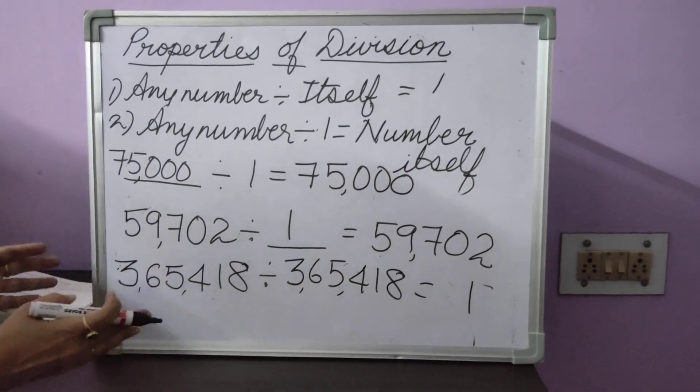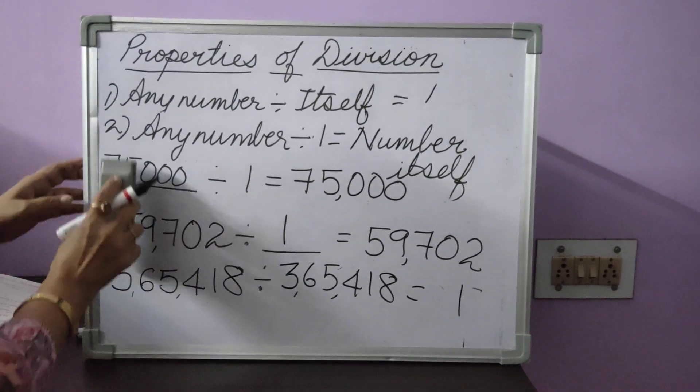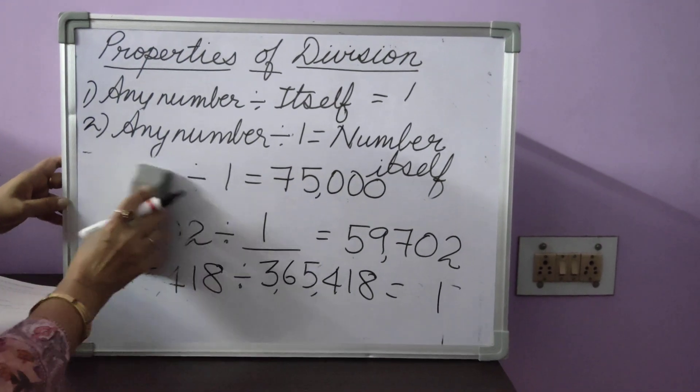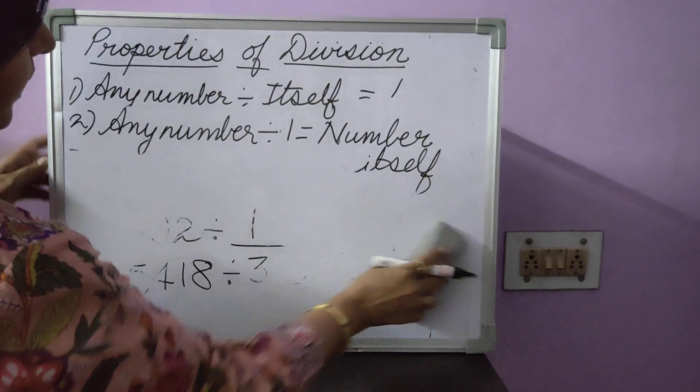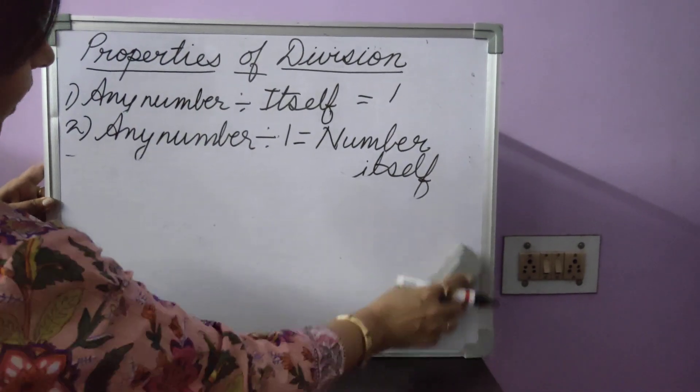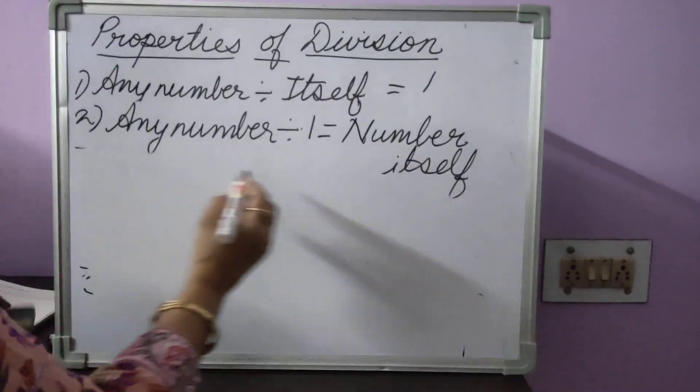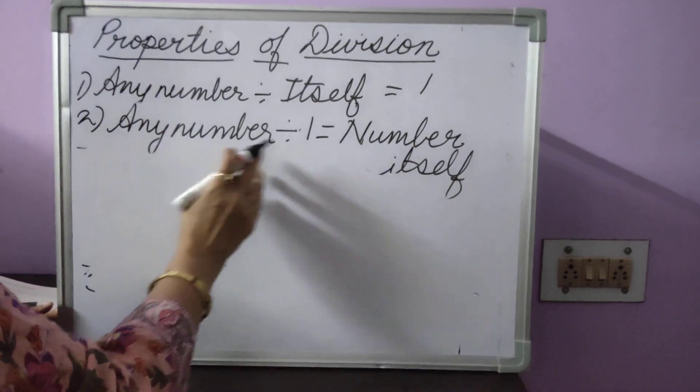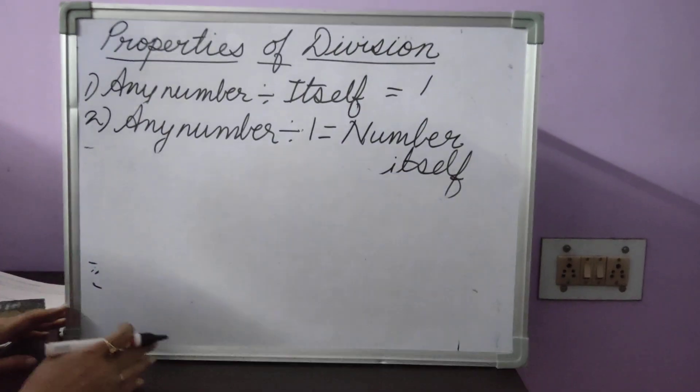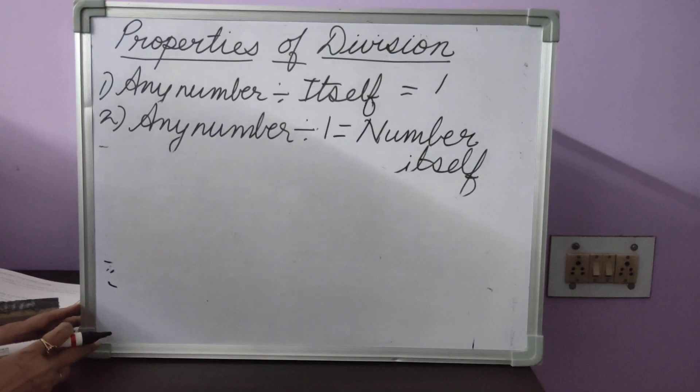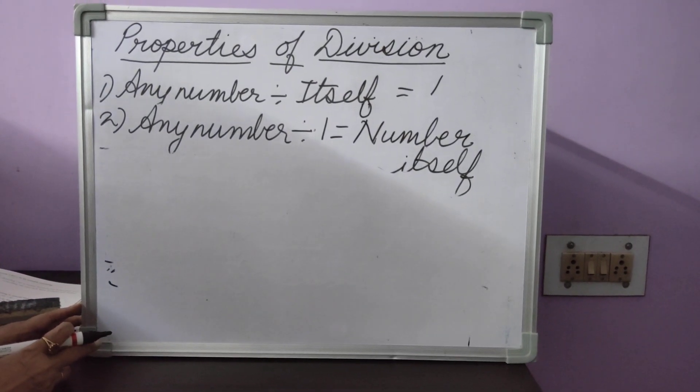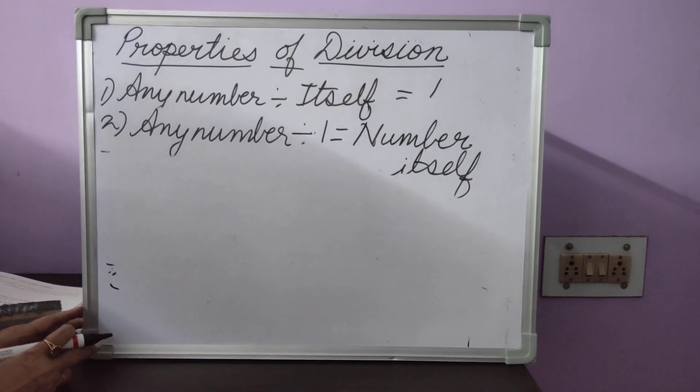So, this is the way children we are going to use these two properties of division. Any number divided by itself is equal to 1. And the second property says, any number divided by 1 is equal to the number itself. So, this is what we are going to do today. And we will stop over here today children. Have a good day.